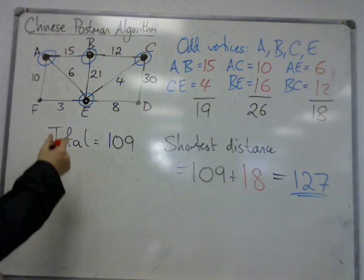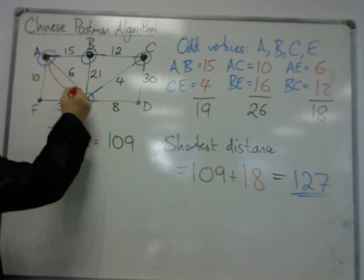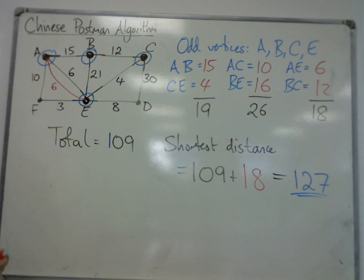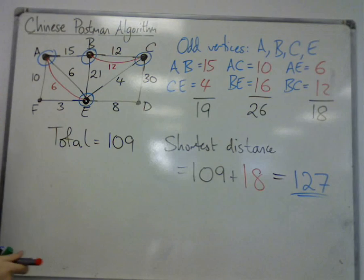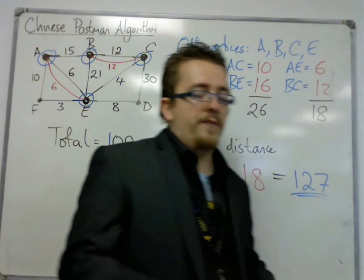So, A, E is repeating this edge. So, I'm backtracking on that edge. And B, C is 12. So, I'm backtracking on that edge as well. So, now, that has made the graph Eulerian. So, all the vertices have even order.